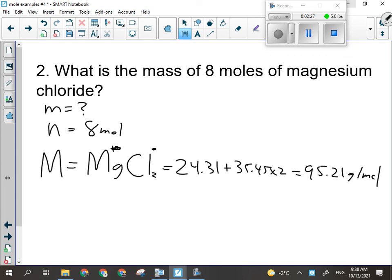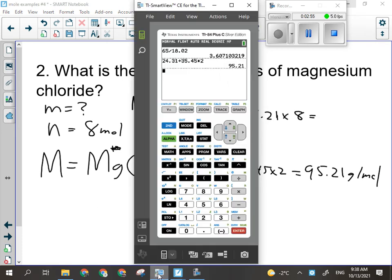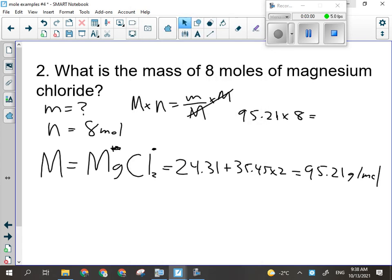All right, so now we have n and we have big M. So n equals little m over big M. I'm trying to find little m, so if I want to move something I do the opposite. So I'm going to multiply by M. What I do to one side I do to the other. M times little n will give me little m. So we're looking at 95.21 big M times 8 n equals little m. 761.68 grams.